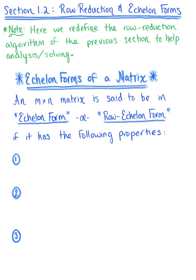In section 1.2, we are continuing our exploration of solving linear systems, more specifically related to the row reduction of matrices and what we call echelon form of a matrix. We are again going to be redefining that algorithm for solving systems that we saw in section 1.1, helping us to improve the method for solving and analysis of our systems.